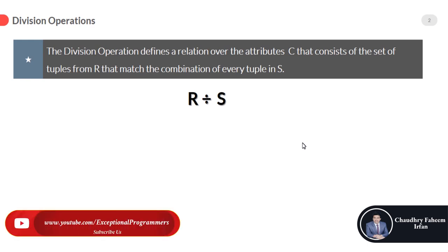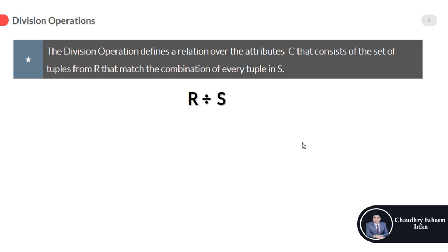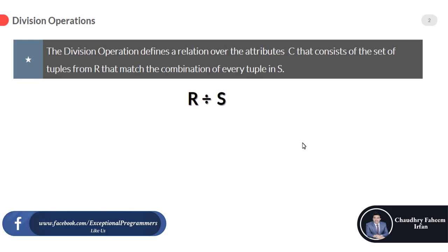R division operator S. Tuples from R will be added into the result if R's tuple must be matched with every tuple in S. The division operator is used when we have to evaluate queries which contain keywords like 'all', for example, select a person whose account is in all the branches of a city, or in any wording where we are going to select all records against any single record.